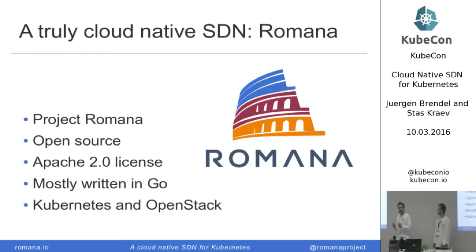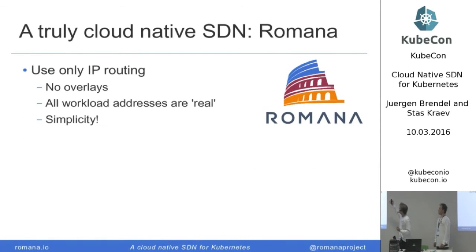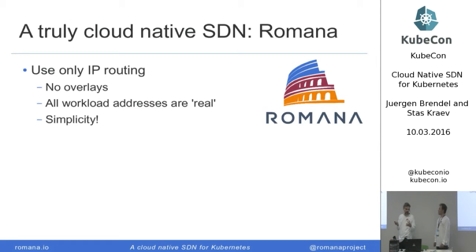This is the project we are working on, which we believe is a cloud-native SDN: Project Romana. Mostly written in Go, it supports Kubernetes and OpenStack. We use only IP routing, no overlays. All endpoints — pods, VMs, or whatnot — get real IP addresses which really can exist and work in your network. The actual network hardware without any extra configuration can really route these addresses. The resulting network configuration on your hosts is beautifully simple — hardly anything there. Very efficient and fast, very thin.